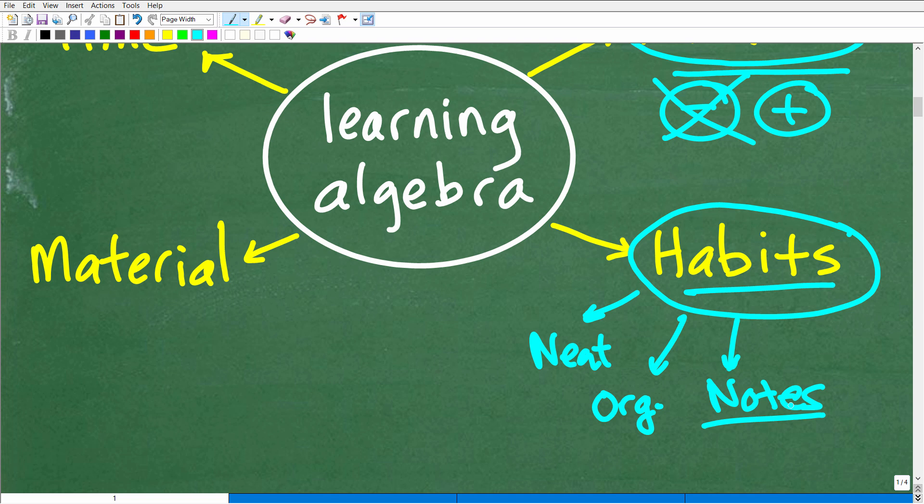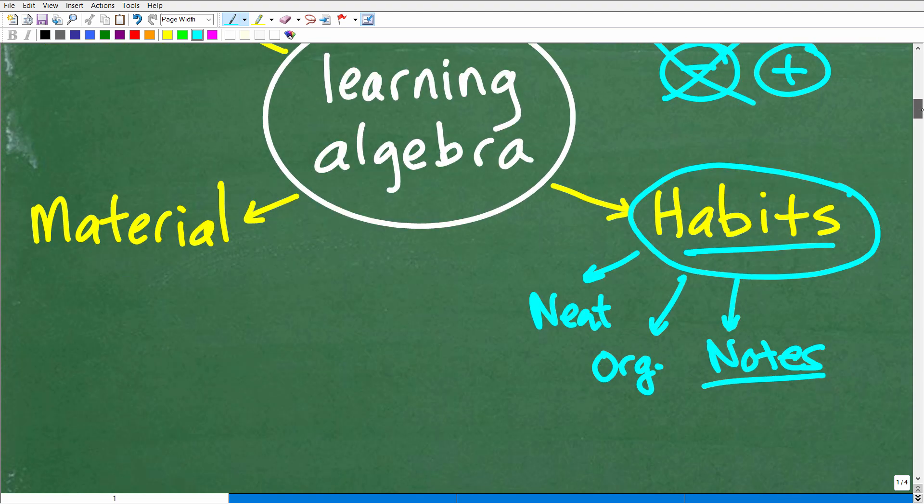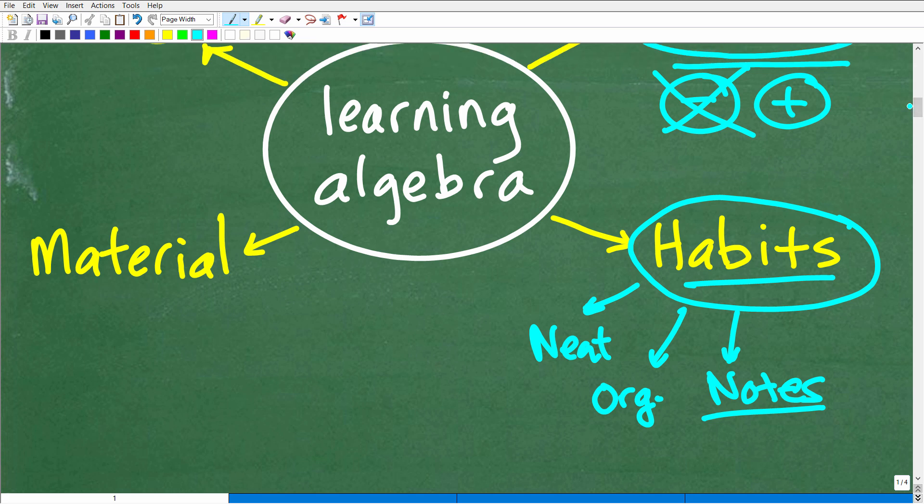How do you approach learning? Well, you should be taking notes. You should be asking questions. You need to be neat. You need to be organized. You need to be doing all the homework. You need to be aware of how well you're doing. So these are the kind of habits that you may not have learned in school for whatever reason.